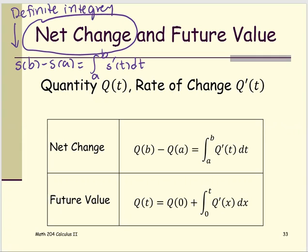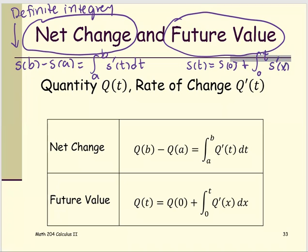When you find a future value, or what we did for the physical application, that is S of T equals S at zero, or the initial position, plus the antiderivative from zero to any point of time T of the velocity function or the S prime of the dummy variable X.